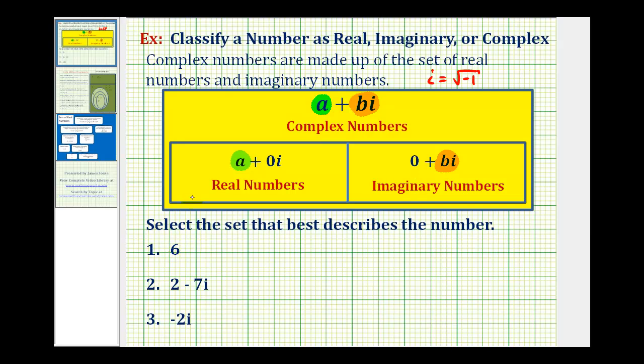First, we have the number 6, which if we want to, we could think of this as 6 plus 0i. So it is a complex number, but since b is equal to zero, it is better to describe this as a real number.